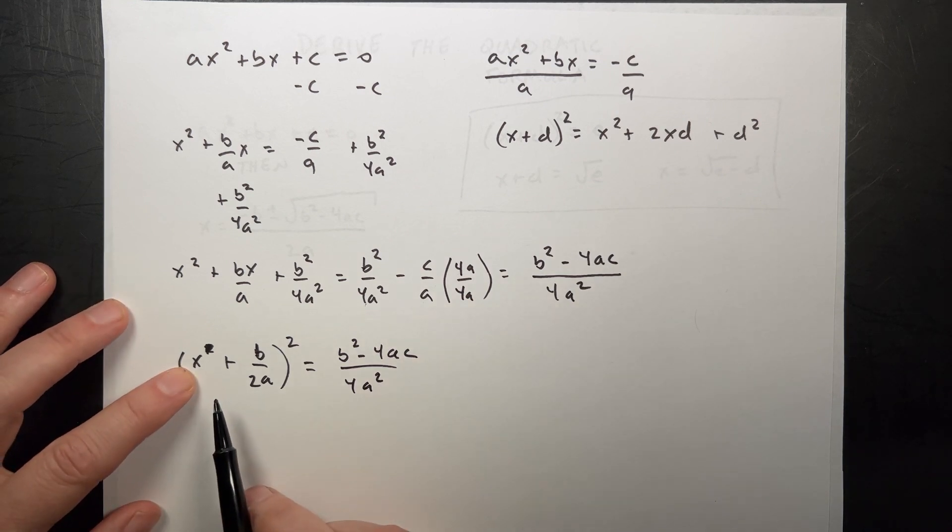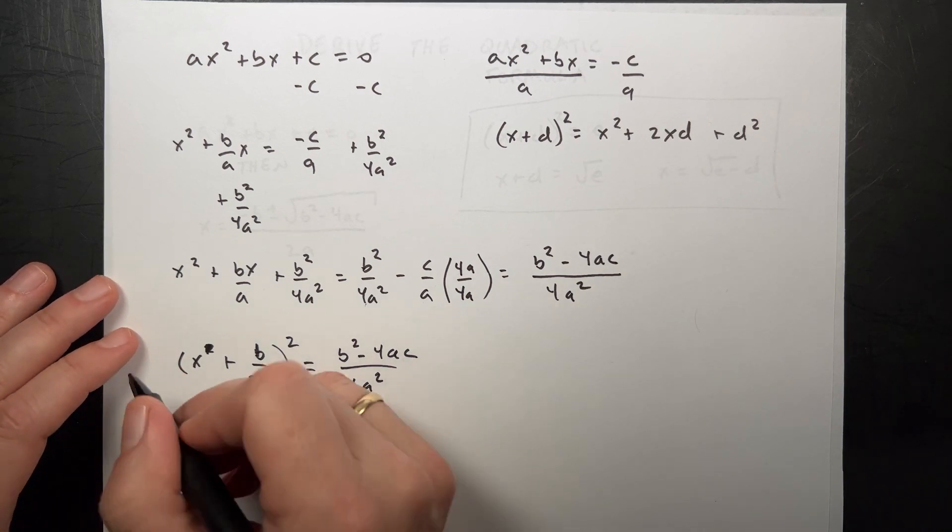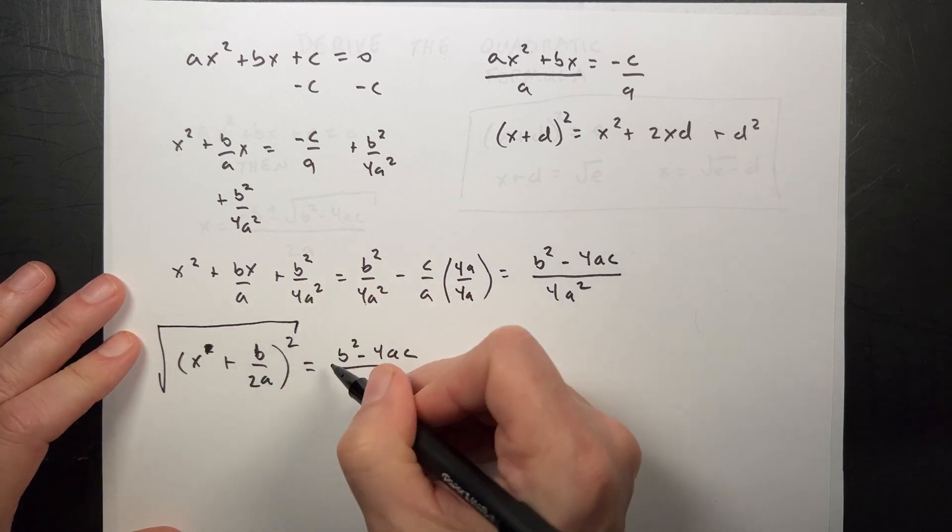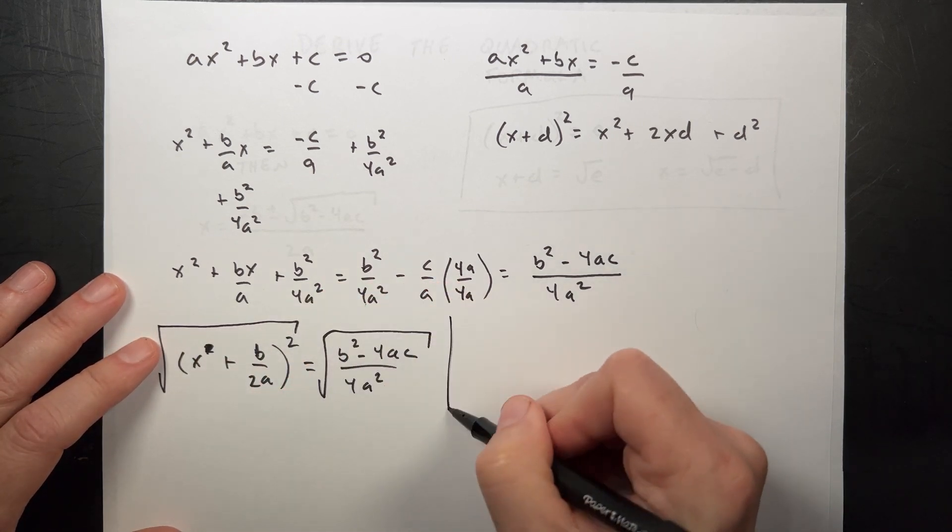Now I want to solve for x, so the first thing to do is to take the square root of both sides. So I take the square root of this side, I have to take the square root of that side. So then you draw a line there just so you know we're on a new thing.